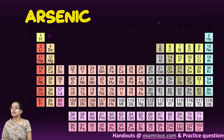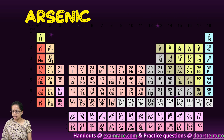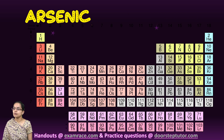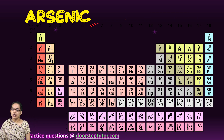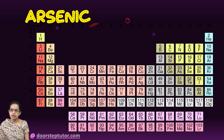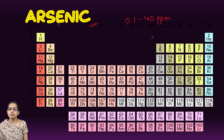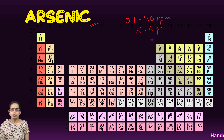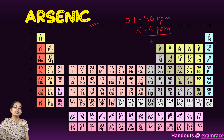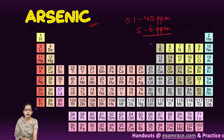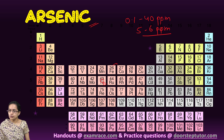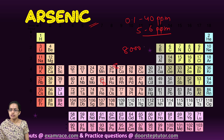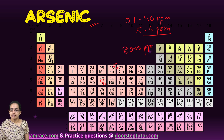Talking about the proportion of arsenic in soil — the concentration varies. On average, we believe it is 0.1 to 40 parts per million, with an average of 5 to 6 parts per million. In some parts, concentrations have zoomed up to 8,000 parts per million.